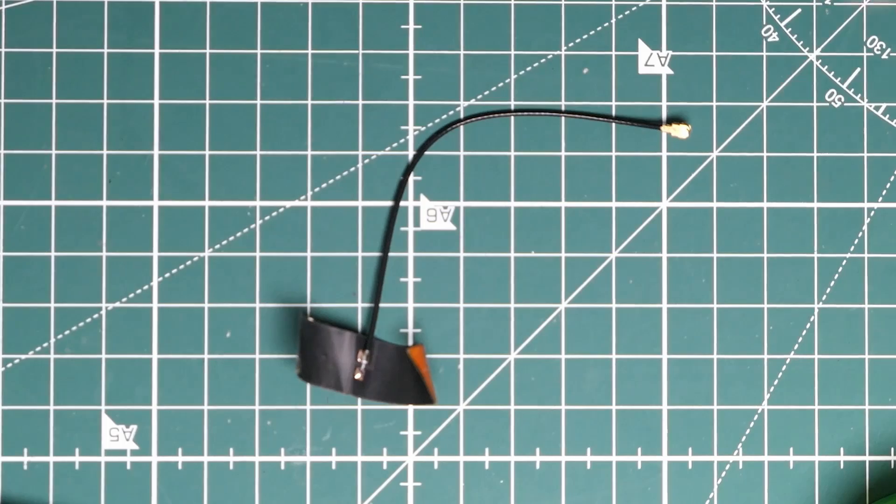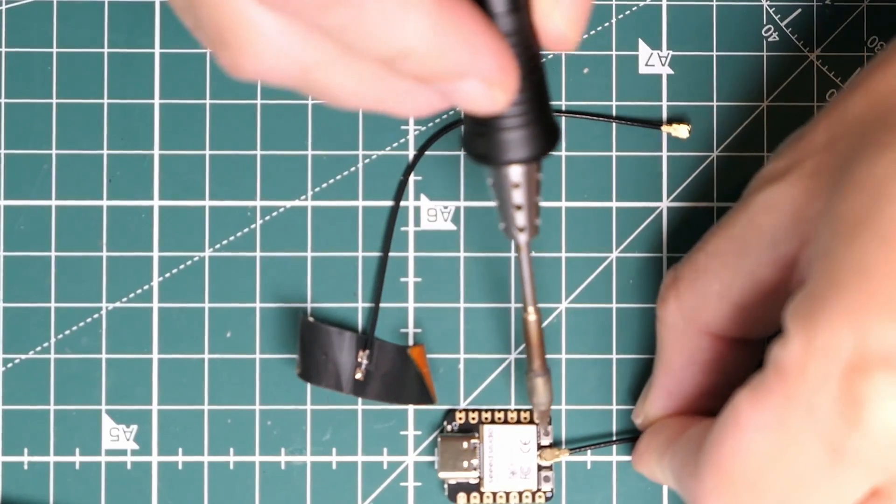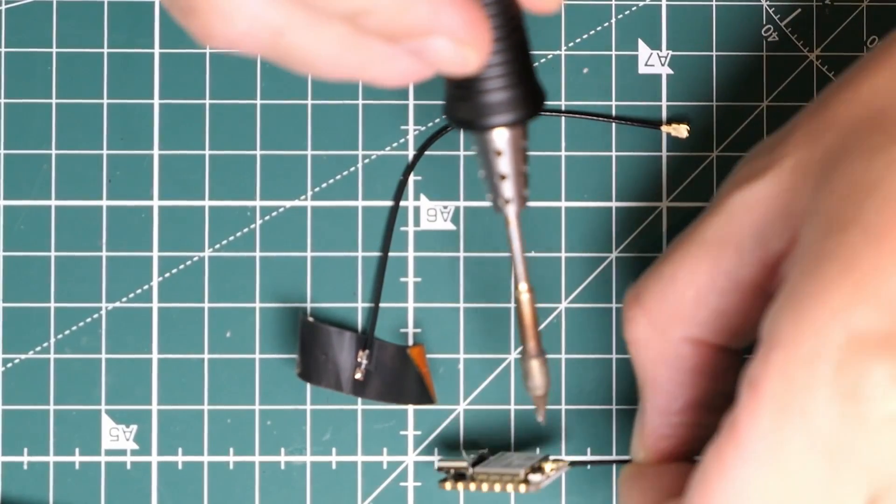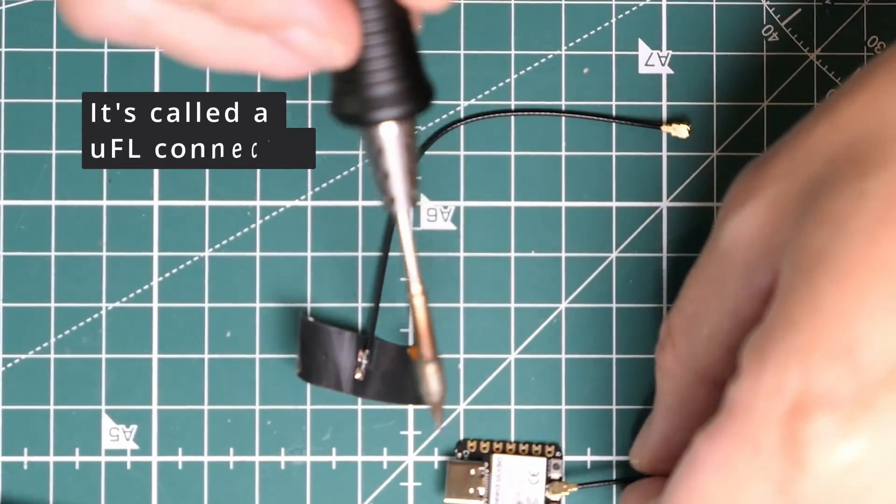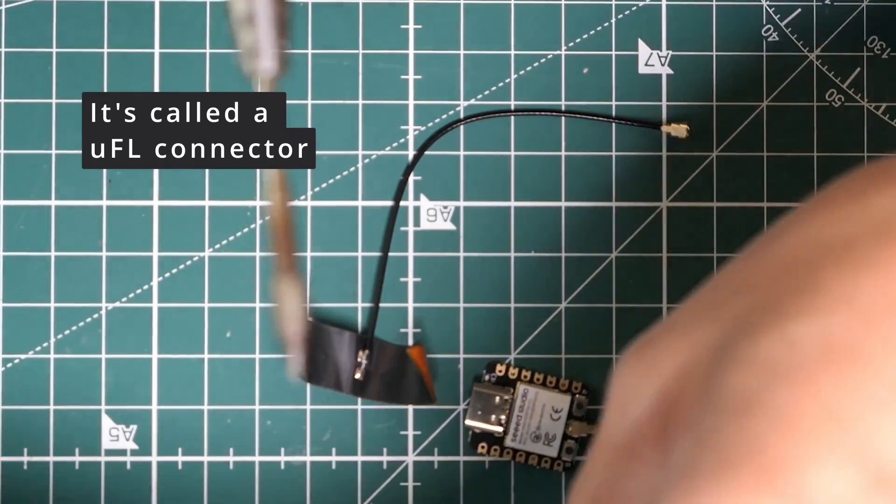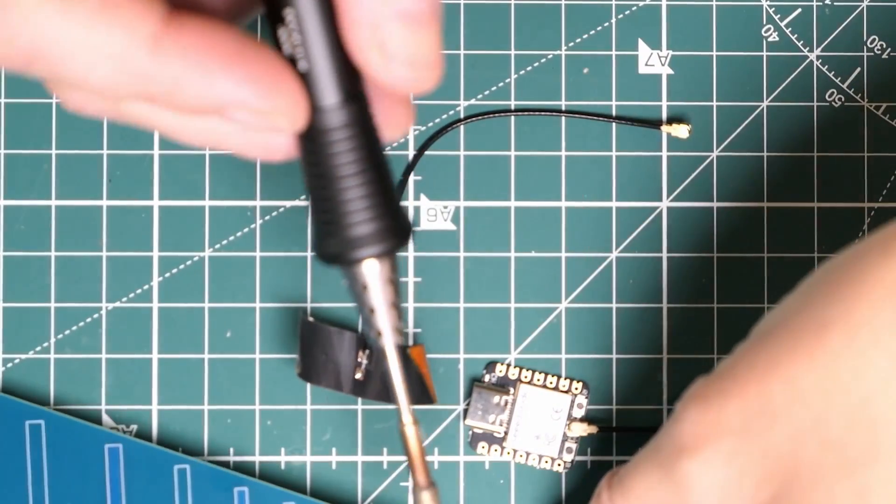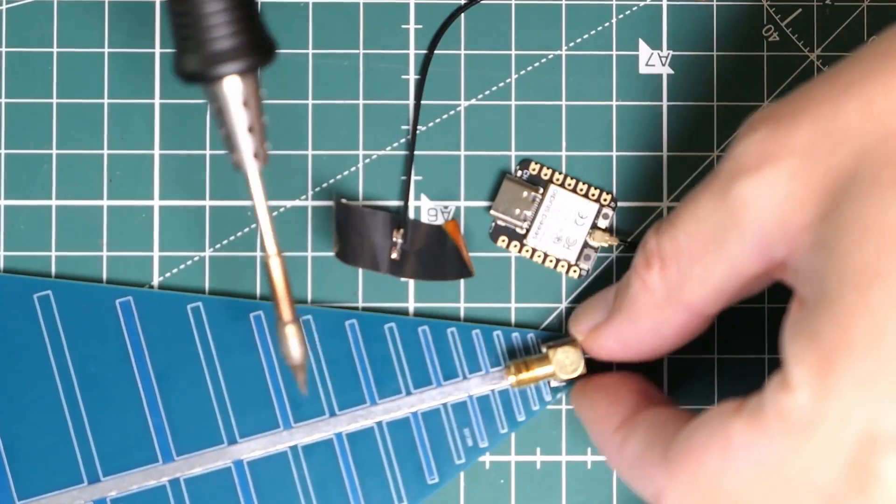So if I want to test this antenna on the ESP32, I'm going to have to do some modifications because the ESP32, this is the Siege Studio version, has this little connector on it. I don't know what it's called, but for sure this antenna has got an SMA connector on it.